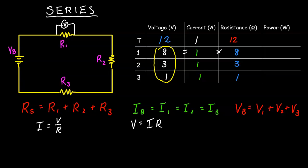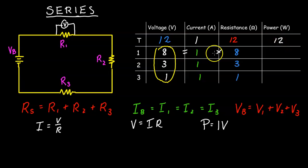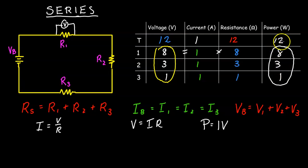Next we're going to calculate power. Power equals current times voltage (P = IV). The total power is 12 times 1 equals 12 watts. For each resistor: 8 times 1 is 8 watts, 3 times 1 is 3 watts, and 1 times 1 is 1 watt. The power of R1 plus R2 plus R3 adds up to the total power of the circuit, which makes sense because power is how quickly energy is being used or transformed.